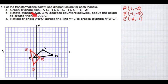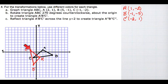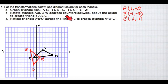Part C: I have to reflect triangle A prime B prime C prime across the line y equals 2 to create triangle A double prime B double prime C double prime. Which triangle am I reflecting? It says triangle A prime B prime C prime, which means I'm reflecting the red triangle. That's why it really helps to label every single point you are graphing.